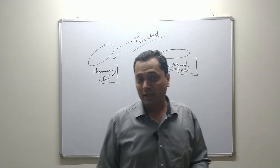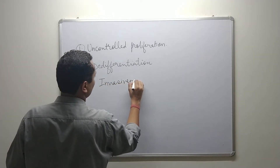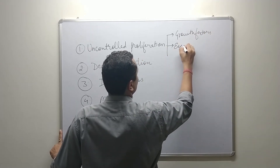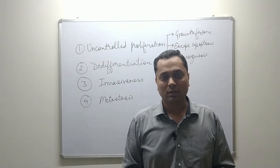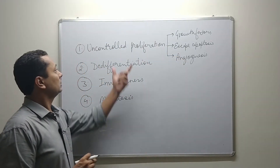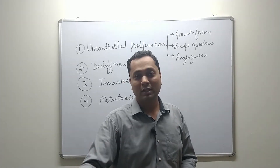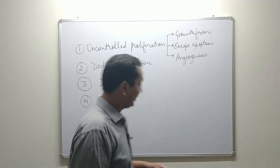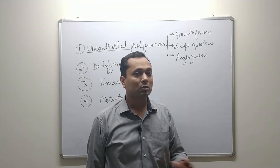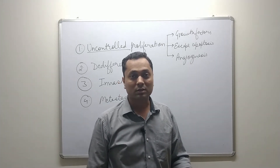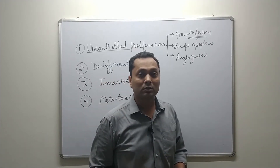Now let's see what the differences are between a normal cell and a cancerous cell. Cancerous cells undergo uncontrolled proliferation — normal cells do proliferate and divide, but they do it in a controlled manner. When this proliferation becomes uncontrolled, it leads to neoplasia and formation of tumors, which in later stages may become malignant or cancerous. This uncontrolled proliferation occurs because these cells produce significant amounts of growth factors — cell signaling molecules that promote cell growth.